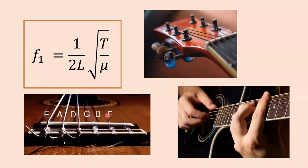Not only does this formula qualitatively confirm what many of you already know about musical instruments, it allows you to actually calculate these things. Your book has a nice discussion about how the combination of different weights of strings and different lengths of strings can be used to accomplish the wide range of frequencies found on a piano, since the piano's frequency range is broader than that of a guitar.